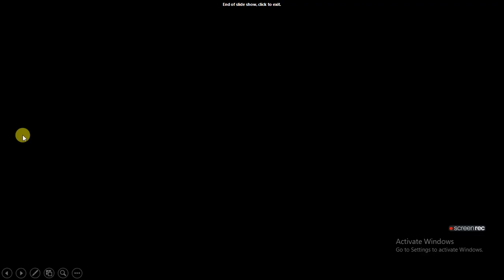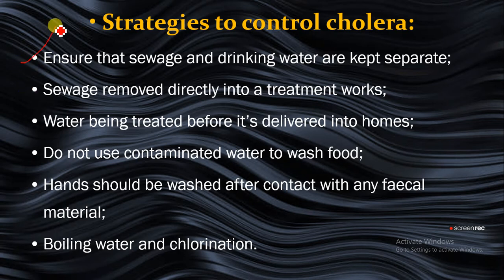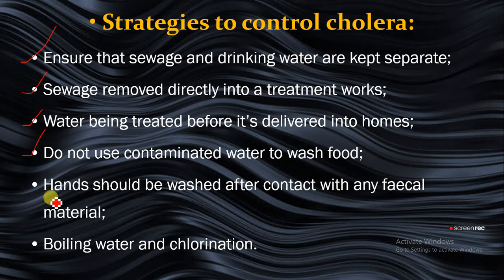Strategies to control cholera include: ensure that sewage and drinking water are kept separate and never mixed. Sewage should be removed directly to a treatment works or sewage treatment plant to purify it and kill any bacteria. Water should be treated before delivery to homes. Do not use contaminated water to wash food. Hands should be washed after contact with any physical material. Boil water and add chlorine to help kill any bacteria found in it.